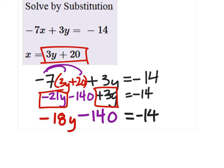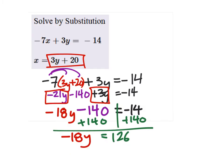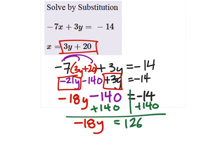I still have that minus 140 and this equals negative 14. Now I need the y's on their own side of the equal side, so I will add 140 to both sides. And I've got this negative 18y is equal to a positive 126. And then finally to solve, I'll divide both sides by negative 18. And I get y equals negative 7.